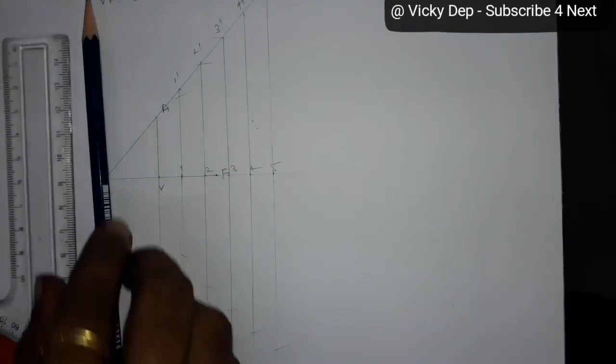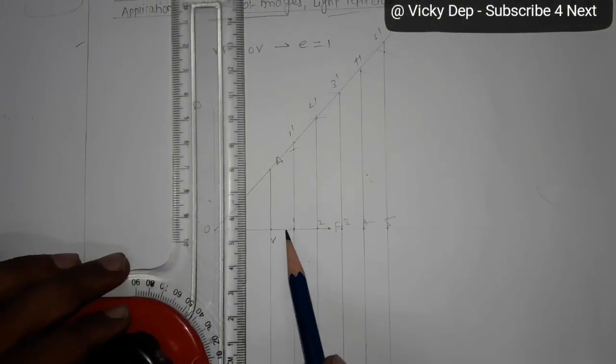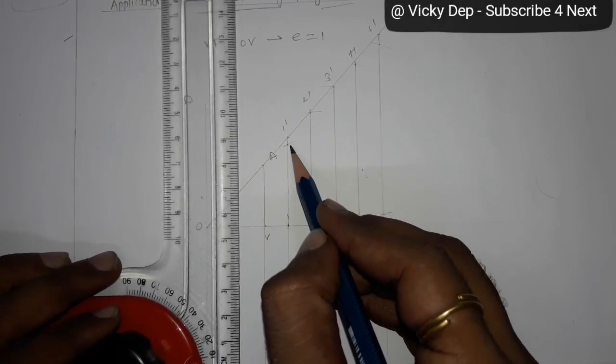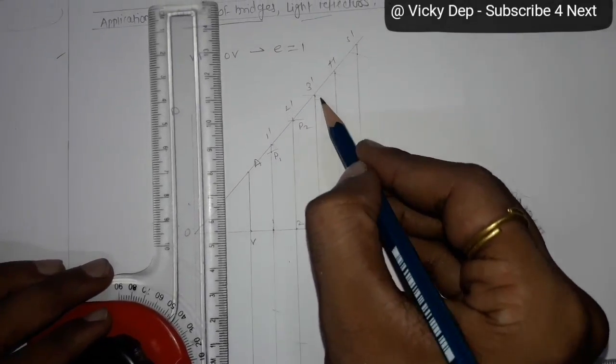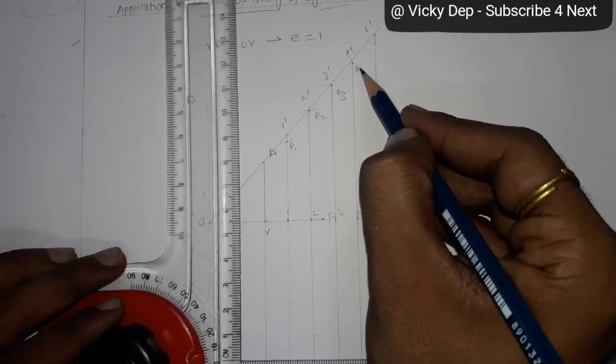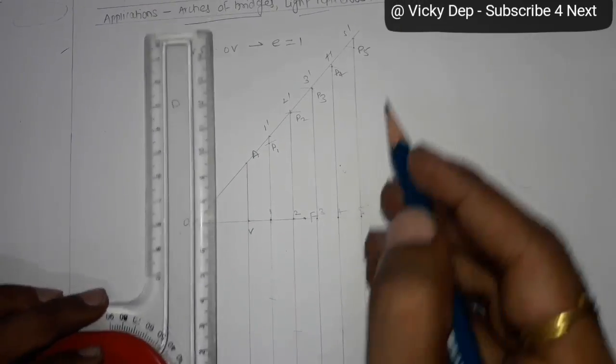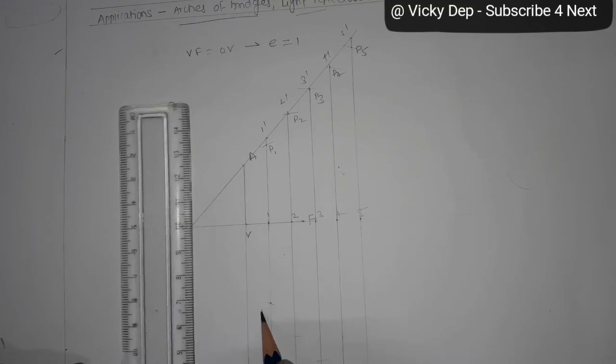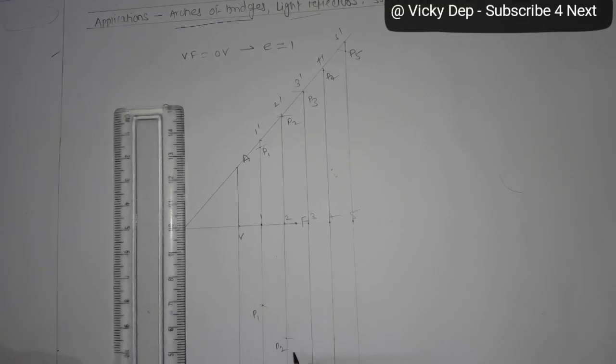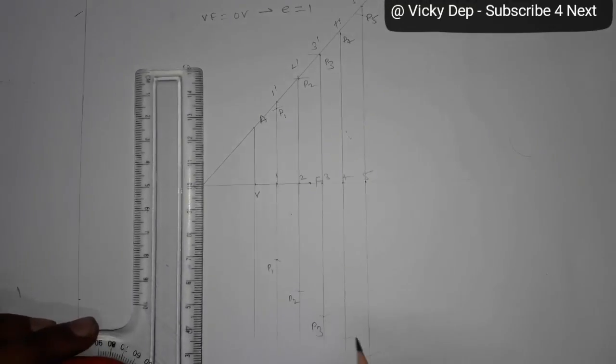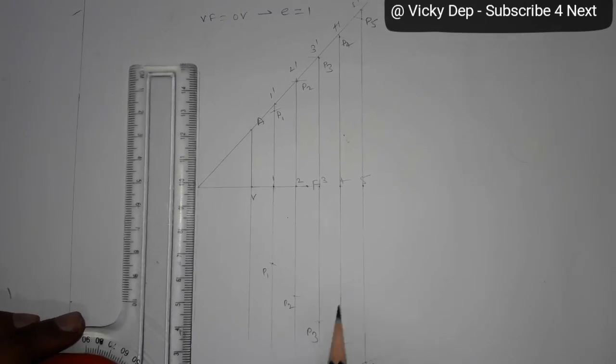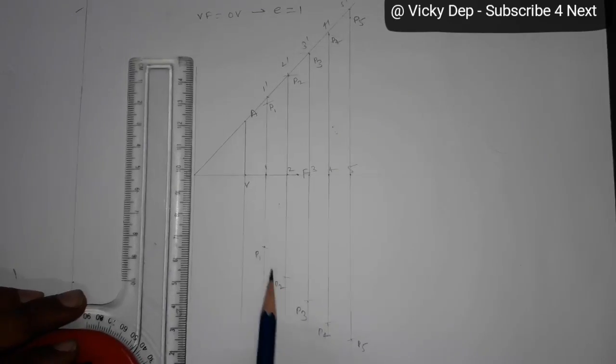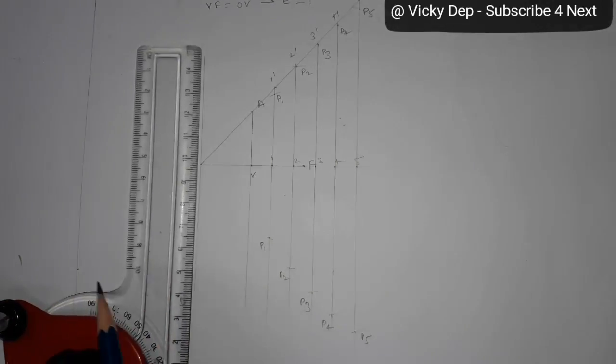Now as you can see here, from 1 to 1 dash, we will get the point P1. Here P2, P3, P4, P5. Similarly downside, P1, P2, P3, P4, and P5. These are very important points. Through these points you will get a parabola.